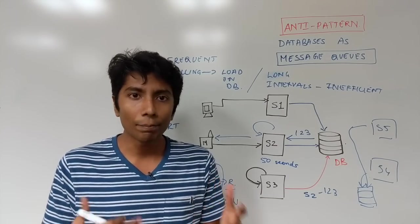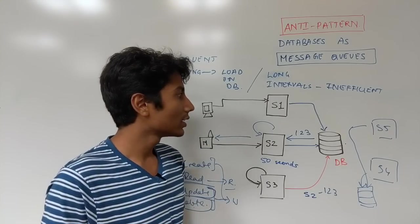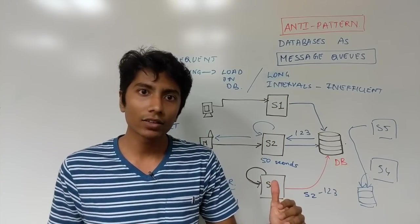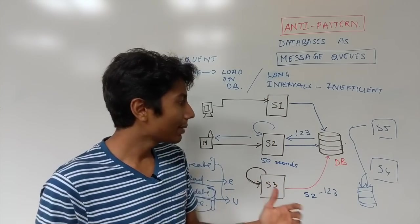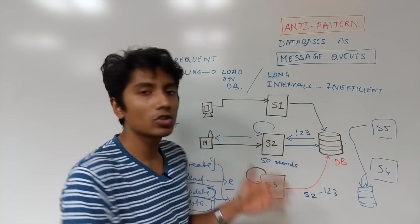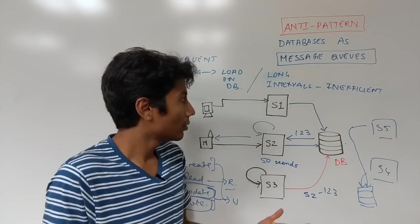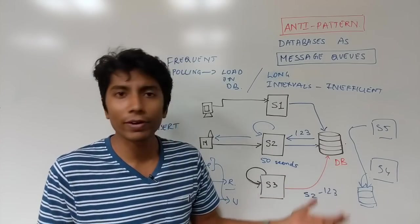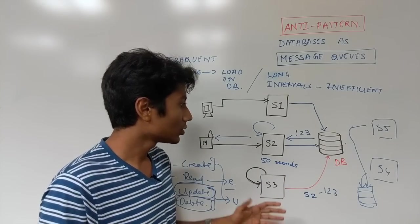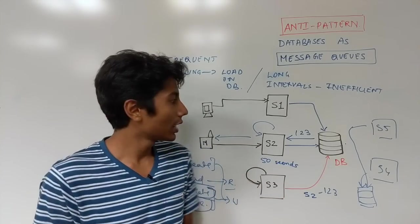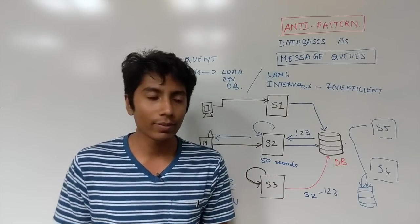The third thing which is a people or a social problem is that whenever you introduce a new concept to a system, it requires training, it requires time. And maybe this system is not worth the effort. It's a call that you have to make, but maybe a database is as perfect as message queues for you.